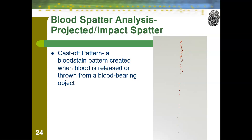Next, we have our cast-off pattern, which is created when blood is released or thrown from a blood-bearing object. For example, if someone was hitting somebody else with a baseball bat, every time they swung the bat, blood would be thrown from it, creating this kind of straight droplet line of blood that you see in the picture — and that would happen with each consecutive swing. This can also be seen with knives.